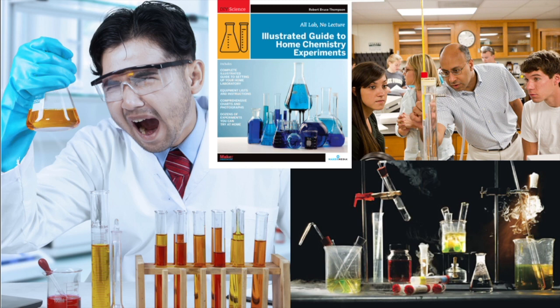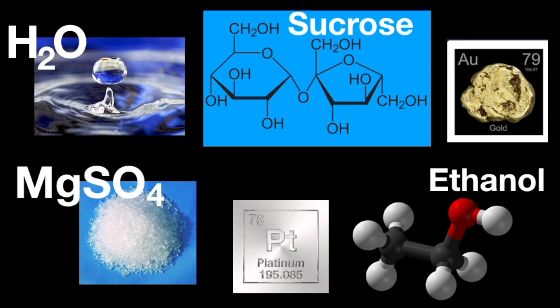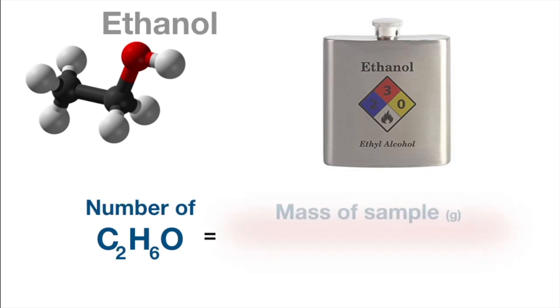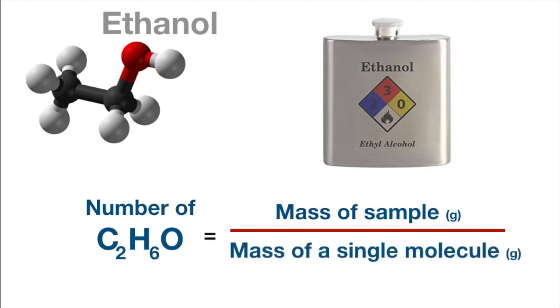Calculating the number of molecules in a given sample of a pure material is trivial to do, so long as you know what the substance is. That's because if you know the chemical formula, you can easily calculate the mass of a single molecule. And if you then measure the mass of your sample, you just divide the total mass by the mass of a single molecule, and you've got your answer. So let's do it.